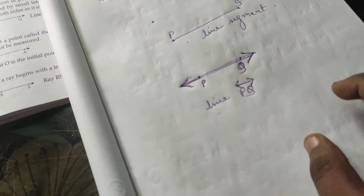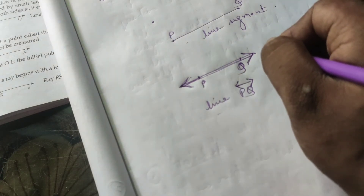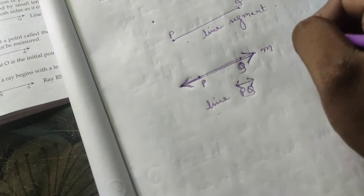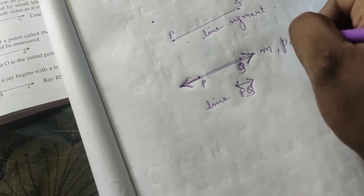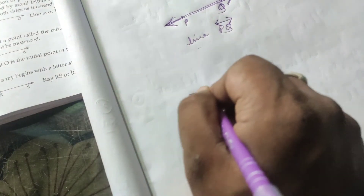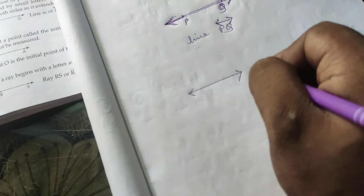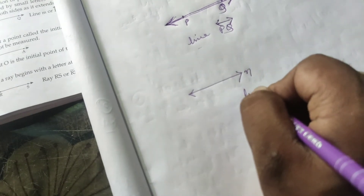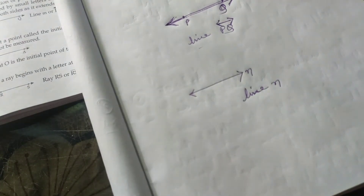We can also represent a line using a small letter such as m, l, or n. For example, this line is represented with small letter n, so it is called line n. Similarly, this line is called line l. Any small letter can be used to represent a line.